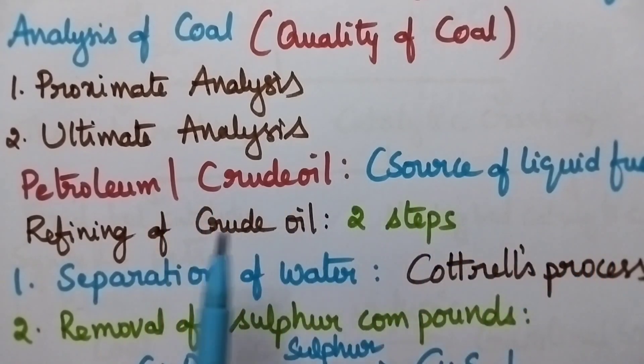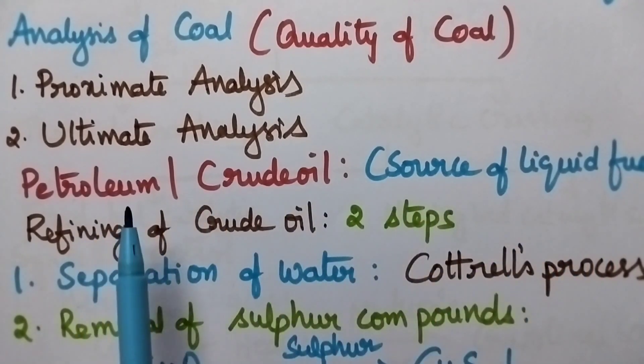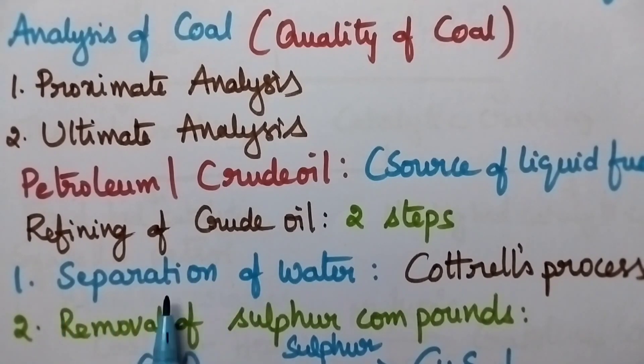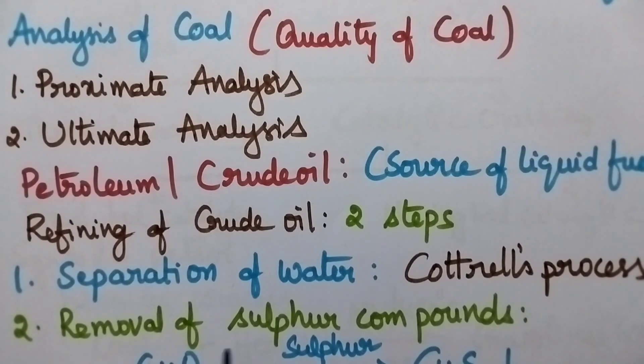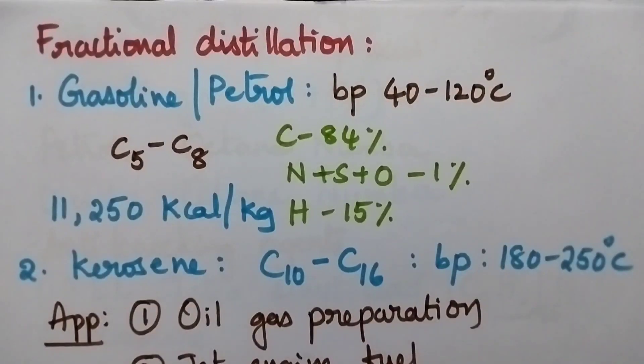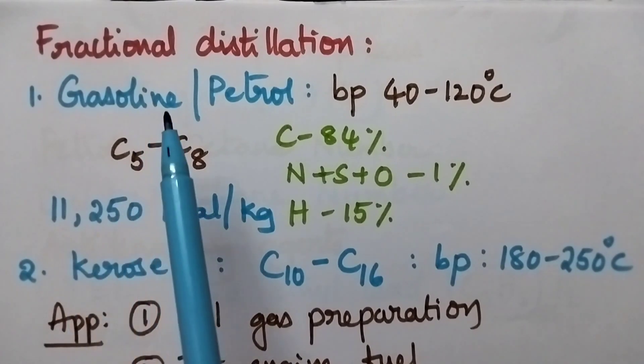Moving to the liquid fuels, the source of all liquid fuels is petroleum. It is also called crude oil. Refining of crude oil involves two steps: first one is separation of water and the second one is removal of sulfur compounds. Separation of water can be removed from the crude oil by treating with copper oxide. Whenever crude oil is treated with copper oxide, it selectively reacts with sulfur and the sulfur is precipitated as copper sulfide.